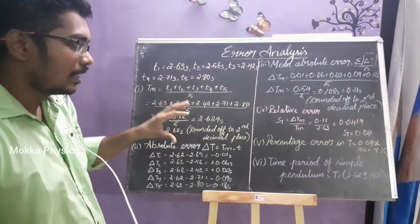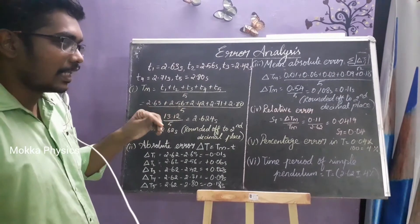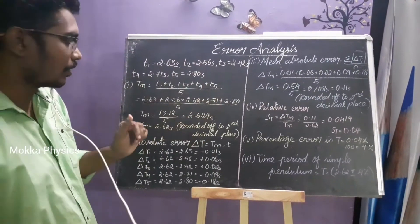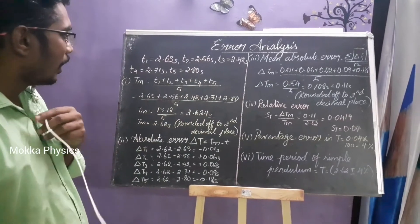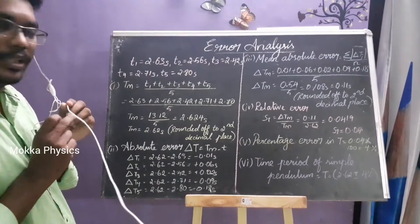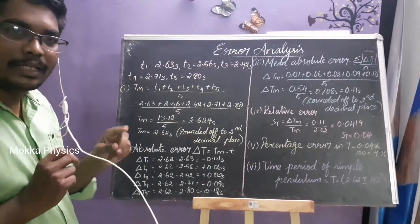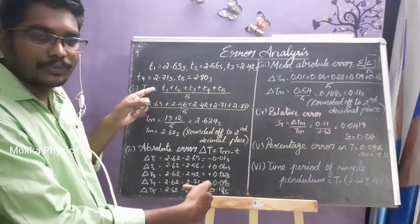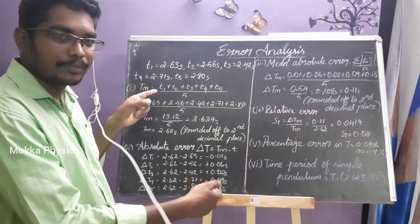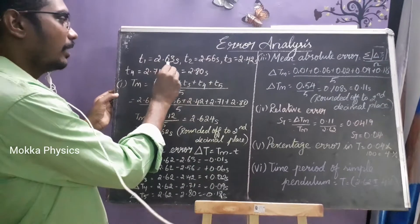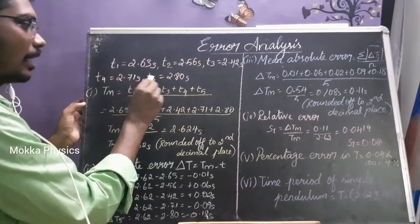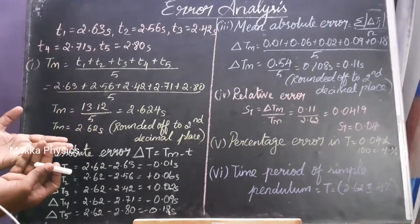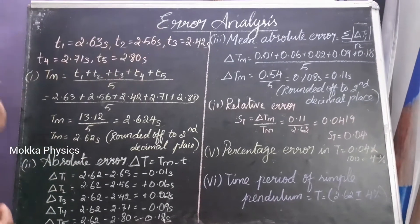If we talk about error in a measurement or classification, we can talk about error in time period. If we talk about error in the reading, there are 5 different values.